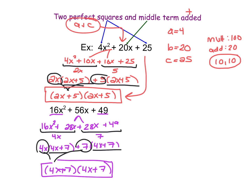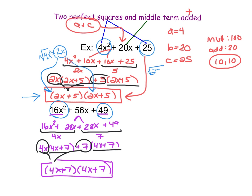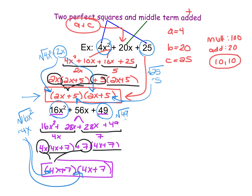What you're hopefully starting to notice is that the perfect squares in the A and C values can help us find the values inside our parentheses. If we take the square root of 4x², the square root of 4 is 2 and the square root of x² is x, so 2x is the first number in the parentheses. Then taking the square root of 25 equals 5, and that's the second number. The same thing happens in the second example: the square root of 16x² is 4x, the first number in parentheses, and the square root of 49 is 7, the second number. We're going to use this pattern to factor expressions with perfect square A and C values very quickly.